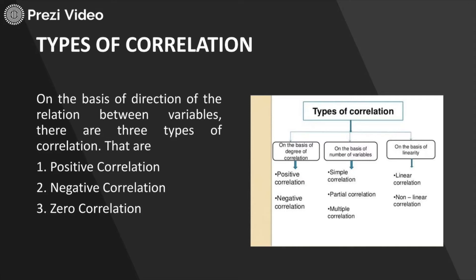Positive correlation means that variables X and Y are related such that if you increase the value of X, the value of Y will increase, and if you decrease X, Y will decrease. Negative correlation is just the opposite — if you increase X, Y is going to decrease, and if you decrease X, Y is going to increase. So positive means changes in one variable impact the other in the same way, and negative correlation means changes in one variable reverse the action in the other.